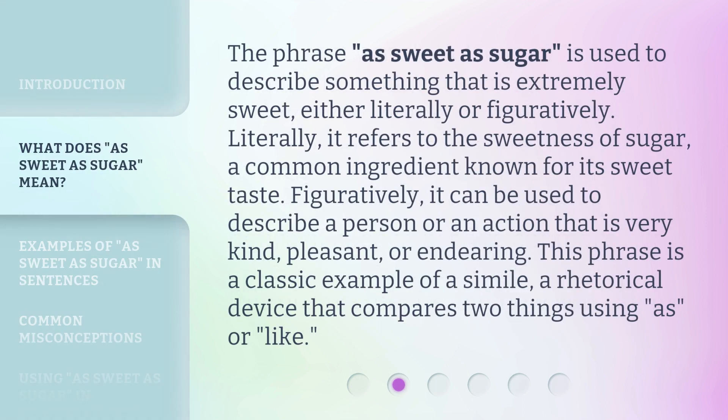The phrase 'as sweet as sugar' is used to describe something that is extremely sweet, either literally or figuratively. Literally, it refers to the sweetness of sugar, a common ingredient known for its sweet taste. Figuratively, it can be used to describe a person or an action that is very kind, pleasant, or endearing. This phrase is a classic example of a simile, a rhetorical device that compares two things using 'as' or 'like.'